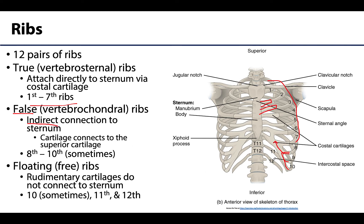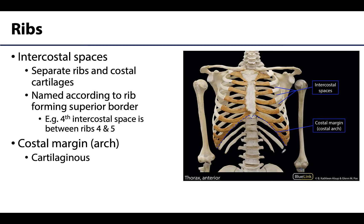The eleventh and twelfth ribs — and sometimes the tenth — are called floating or free ribs because their cartilages do not connect to the sternum at all. There is cartilage on the ends of these ribs, but they do not articulate even with the more superior cartilages. Most ribs are curved, with their attachment on the vertebrae, and they curve around anteriorly. The eleventh and twelfth ribs have less curvature.